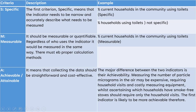Measurable means the indicator should be quantifiable regardless of who uses it — it would be measured the same way. There must be proper calculation methods. 'Percent of current households in the community using toilets' is measurable; you can conduct a survey or assessment to find how much of the household in your target area uses a toilet. The statement should also be achievable — not so ambitious that it is unattainable. Data collection should be straightforward and cost-effective.